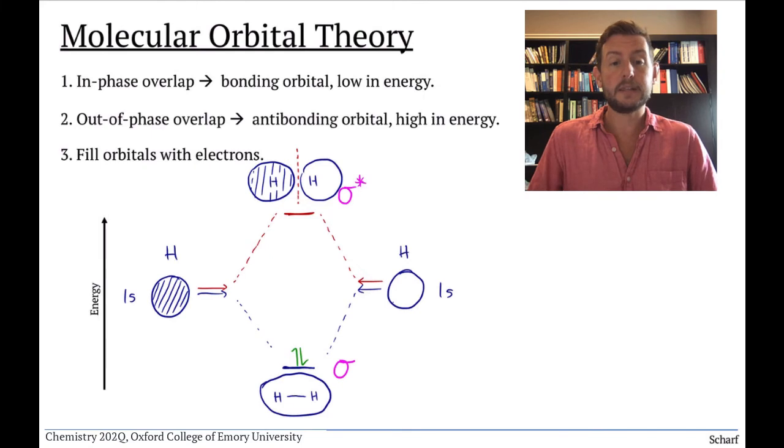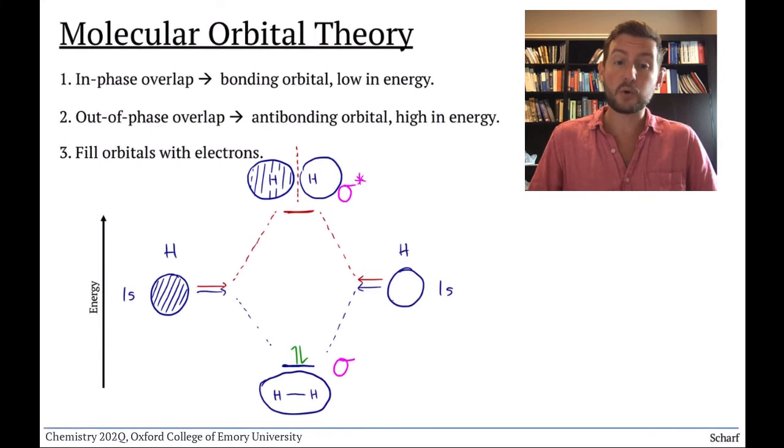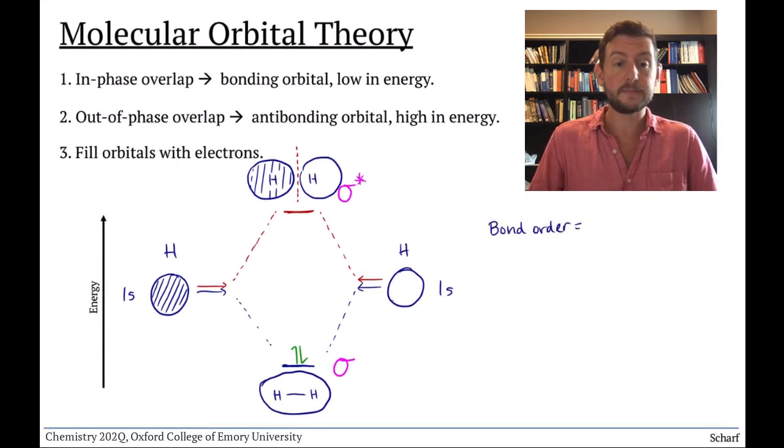From a simple MO diagram like this, we can calculate the bond order for any group of atoms. It's calculated by taking the number of bonding electrons, subtracting the number of antibonding electrons, and dividing by 2.